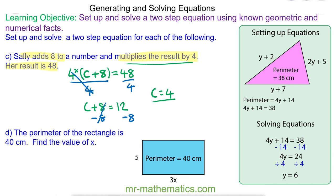We can check this works. Sally adds 8 to a number. 4 add 8 is 12. She multiplies it by 4. 12 times 4 does make 48.